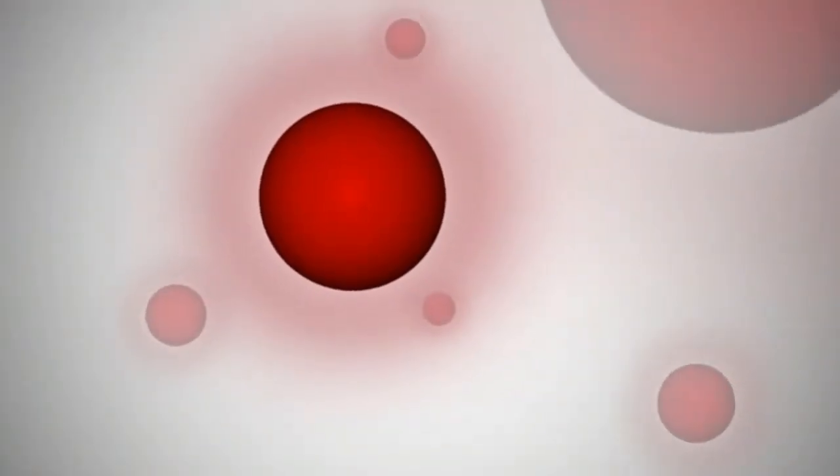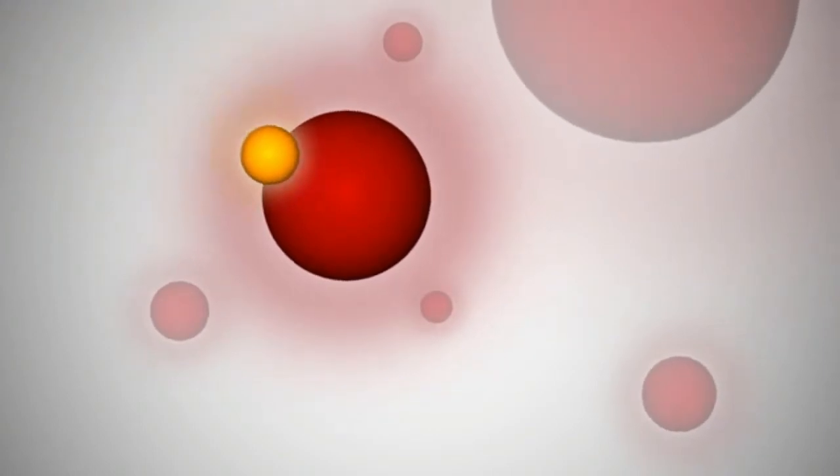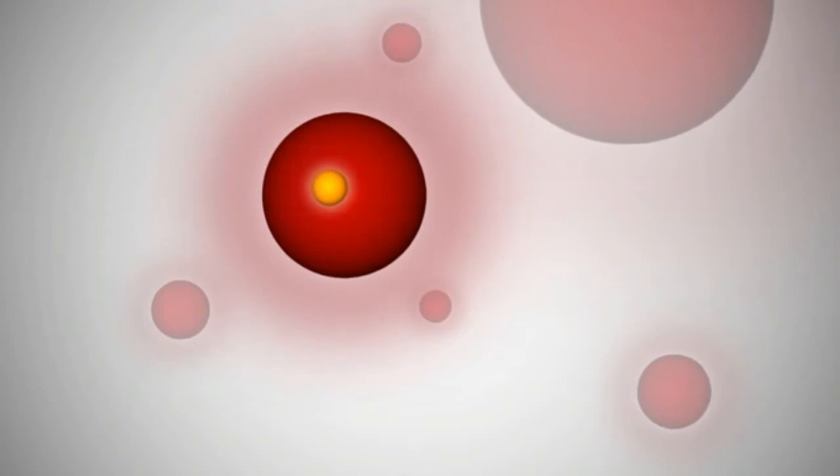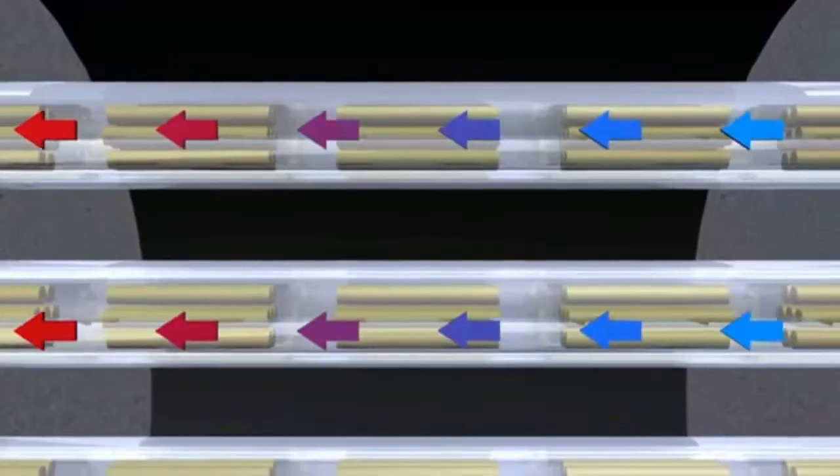The heavy water slows down tiny particles called neutrons so they are more likely to hit and split the uranium atoms. A chain reaction of splitting atoms releases tremendous heat into the heavy water.